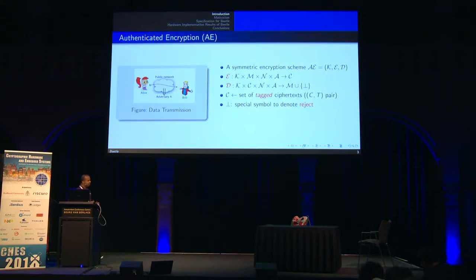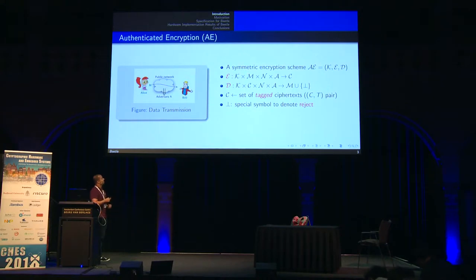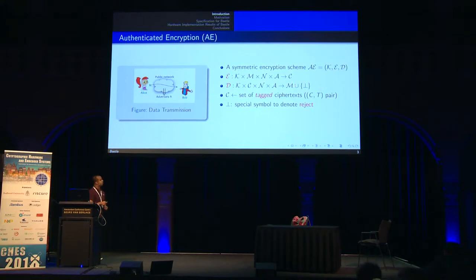Beetle is a family of authenticated encryption ciphers. An authenticated encryption cipher is a symmetric key-based encryption scheme which has two algorithms: encryption and decryption. The encryption takes a secret key, a message, a nonce, and associated data, and it outputs a tagged ciphertext — a ciphertext C and tag T pair, where C provides privacy and T provides authenticity. The corresponding decryption function takes a secret key, tagged ciphertext, nonce, and associated data, and outputs a message if the ciphertext matches the tag; otherwise it rejects.